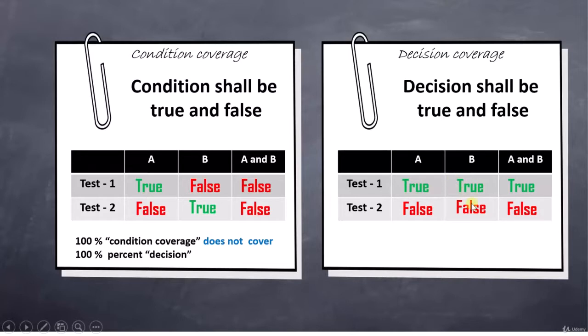And in order to achieve this, we have selected these two combinations because these two are the simple combinations. For A true and for B true, for A false and for B also false. That way we have achieved 100% condition coverage as well as 100% decision coverage.